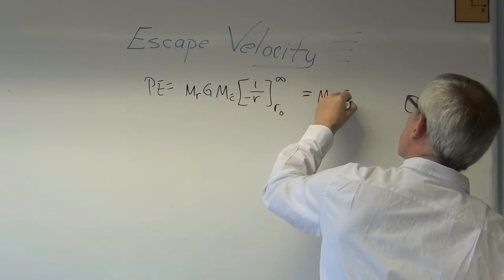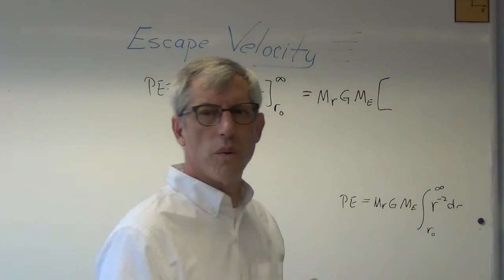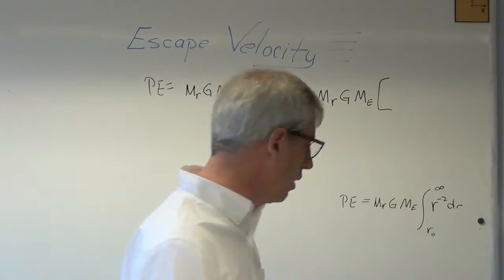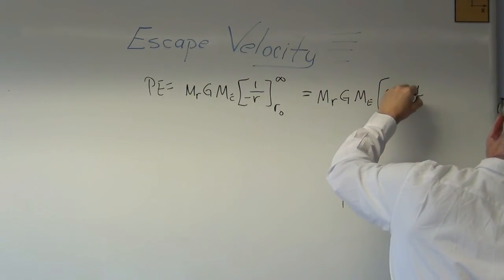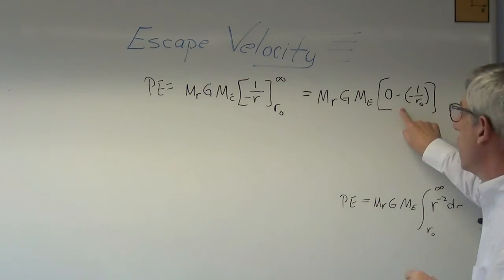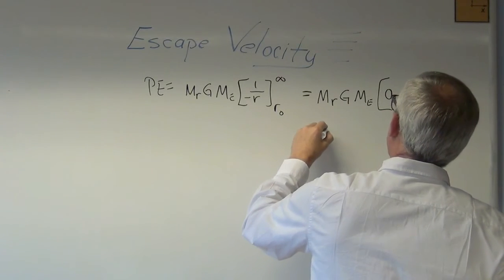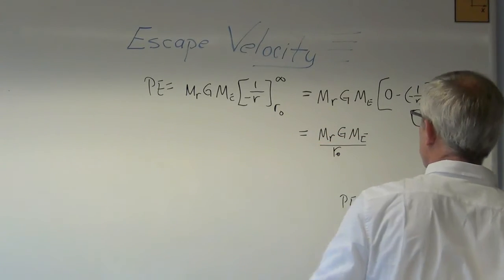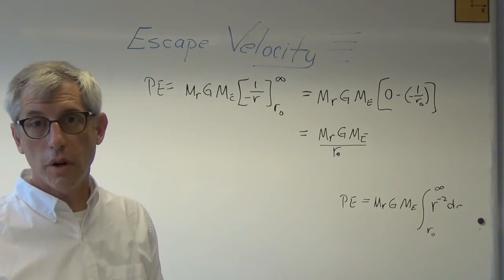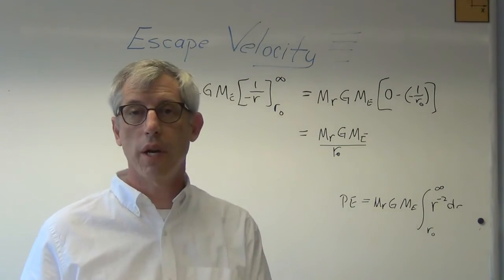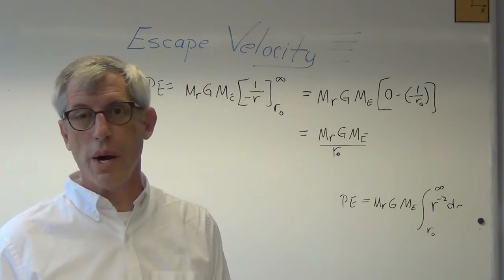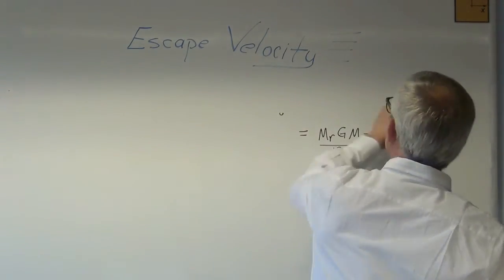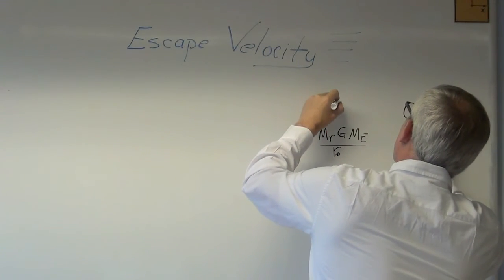All right. Well, that's not so hard. So that turns out to be mᵣGMₑ. What's one over infinity? Well, one over infinity is zero. One over an arbitrarily large number is arbitrarily small. So we'll call it zero. Minus one over r₀ minus - by the way, those two minuses, that's where the plus is going to come from. And so what you get is mᵣGMₑ/r₀. That's it. That's the potential energy you have to have at the surface of the earth in order to escape from the earth's gravitational pull forever. If you have this much energy, you're going to go away. You're never going to come back, at least not to earth.